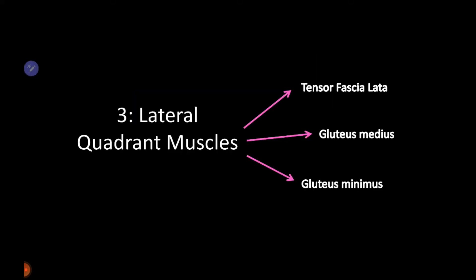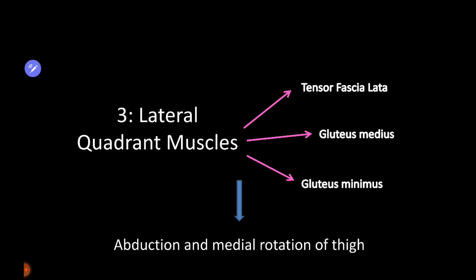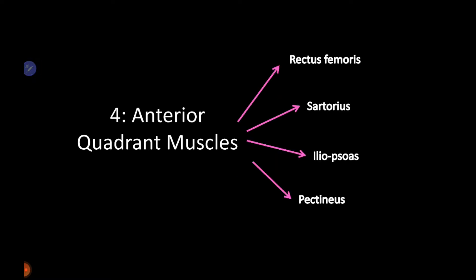The three lateral quadrant muscles are tensor fascia lata, gluteus medius, and gluteus minimus. All these muscles have a similar function: abduction and medial rotation of the thigh. We also have four anterior quadrant muscles: rectus femoris, sartorius, iliopsoas, and pectineus.